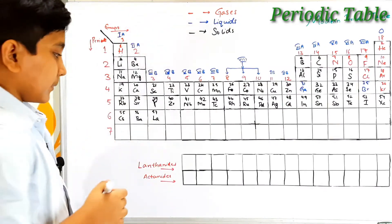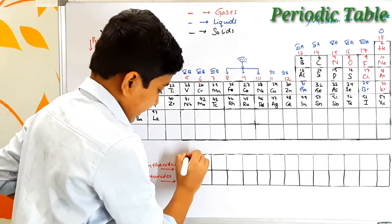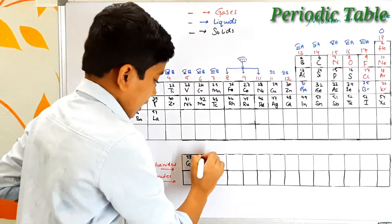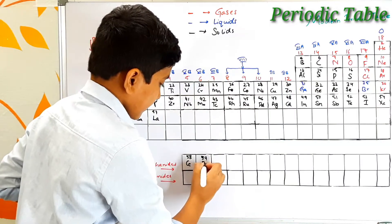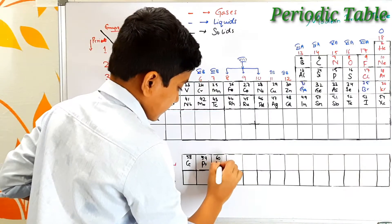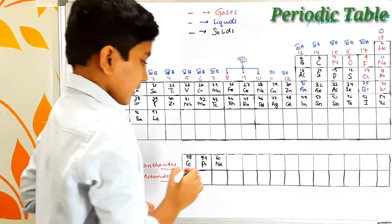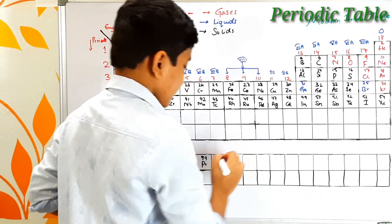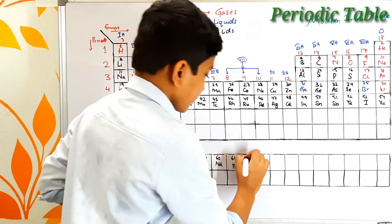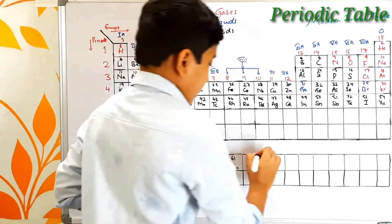Now let's look at the elements in the lanthanide series. Atomic number 58 is cerium, atomic number 59 is praseodymium, atomic number 60 is neodymium — which is the strongest magnetic element found on Earth. Atomic number 61 is promethium — symbol Pm, atomic number 62 is samarium — symbol Sm, and atomic number 63 is europium — symbol Eu.